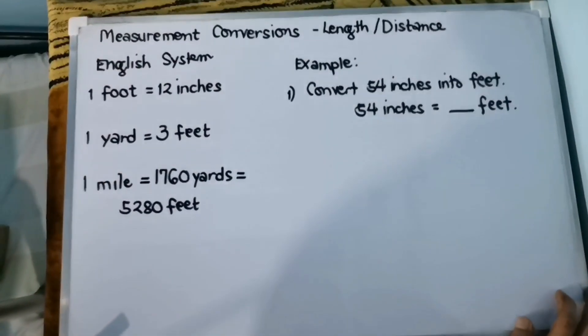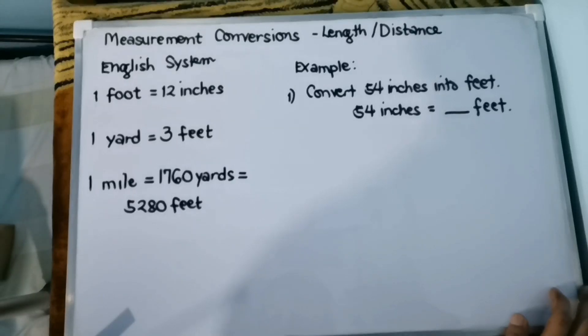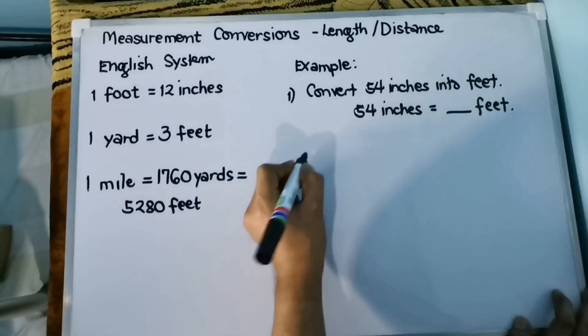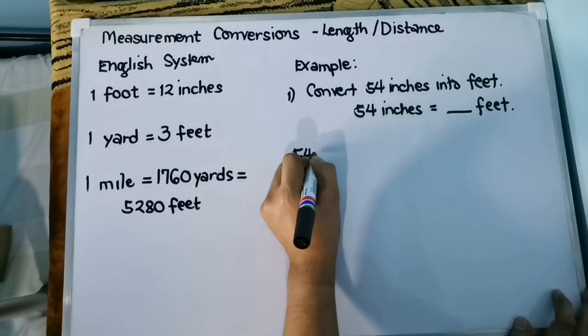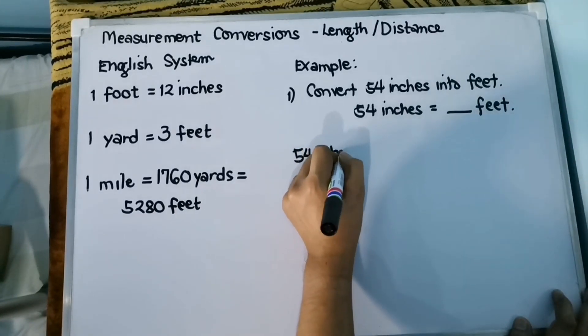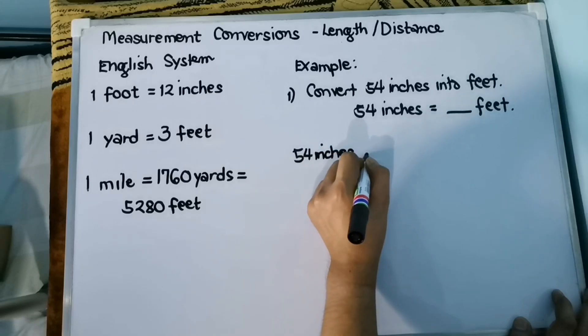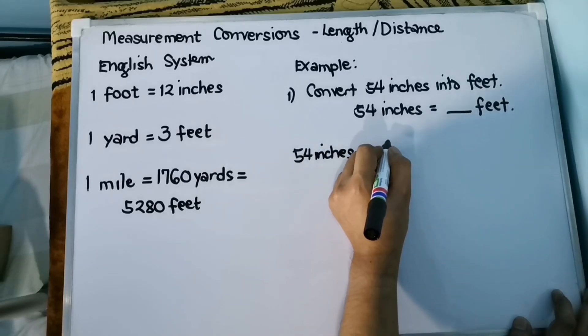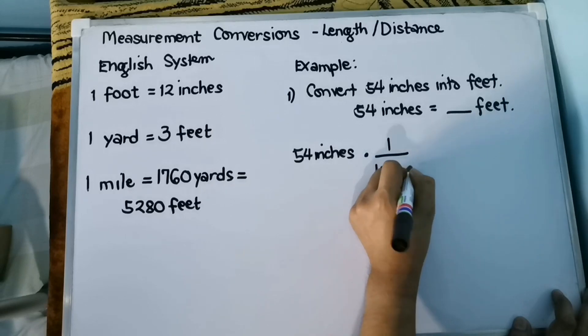So since what you need is the feet unit, it should be placed in the numerator, so the other unit will be cancelled as you multiply. So we can write it as 54 inches times 1 foot over 12 inches.